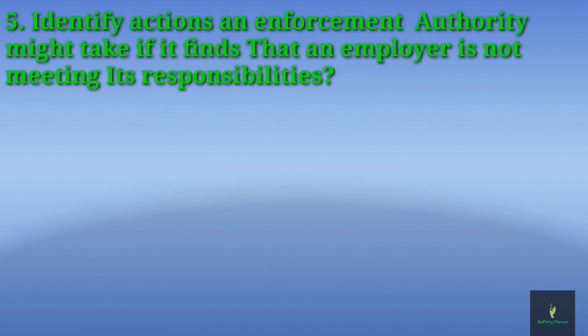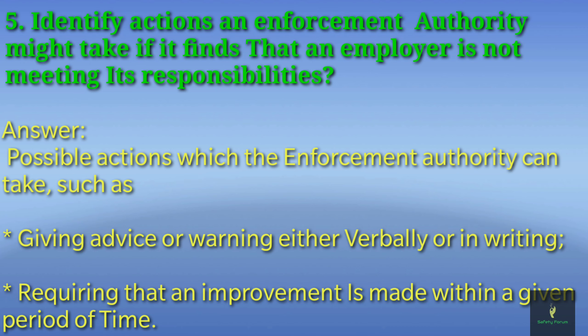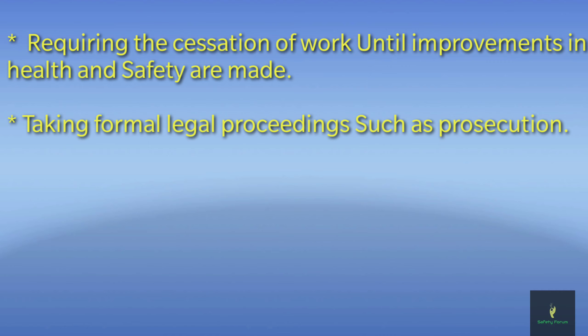The fifth question: identify actions an enforcement authority might take if it finds that an employer is not meeting its responsibilities. The possible actions include giving advice or warning, either verbally or in writing; requiring that an improvement is made within a given period of time; requiring the cessation of work until improvements in health and safety are made — cessation means to stop the work; and taking formal legal proceedings such as prosecution of the company.